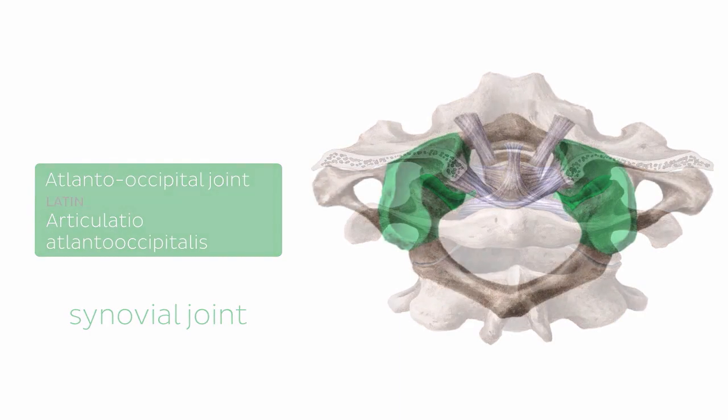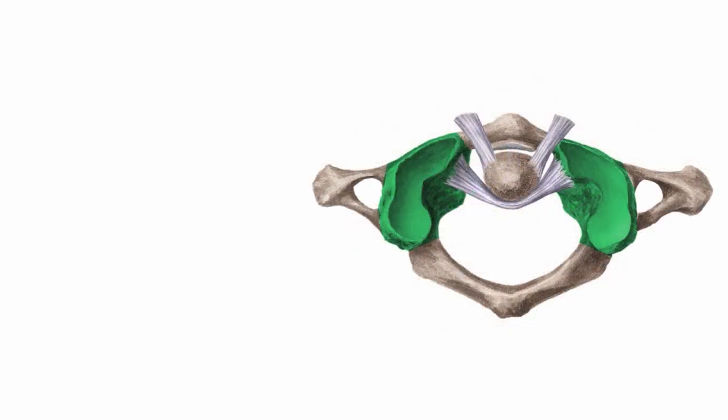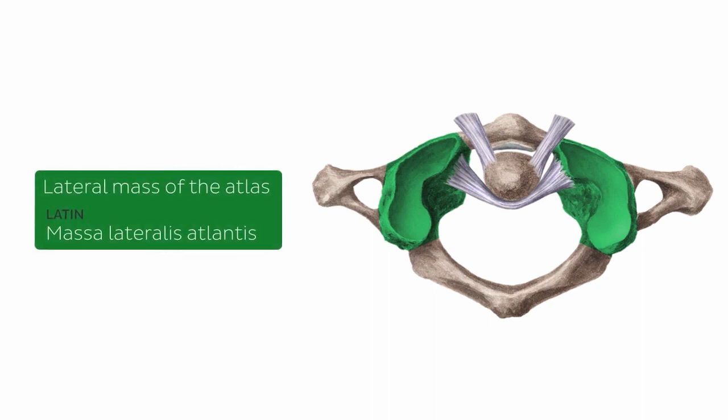The next structures we're going to highlight are part of the atlas. This is known as the lateral mass of the atlas. The lateral masses of the atlas are thickened portions of the atlas that support the skull. They have an inferior and a superior facet, which articulate with and support the occipital condyles and the axis superiorly and inferiorly respectively.